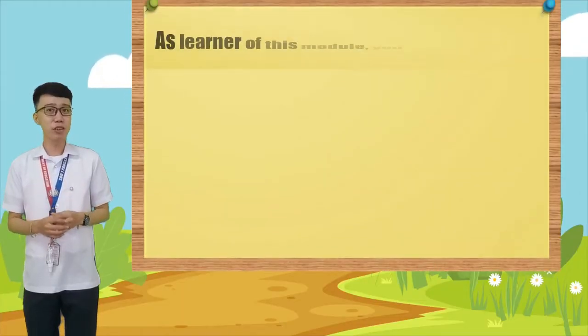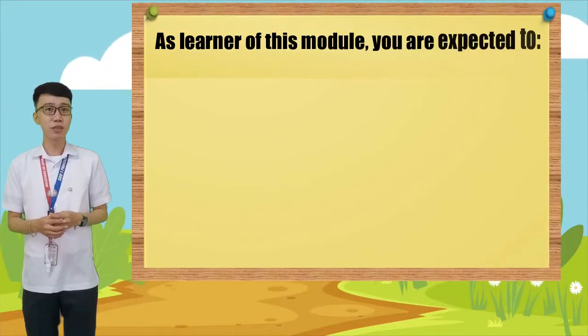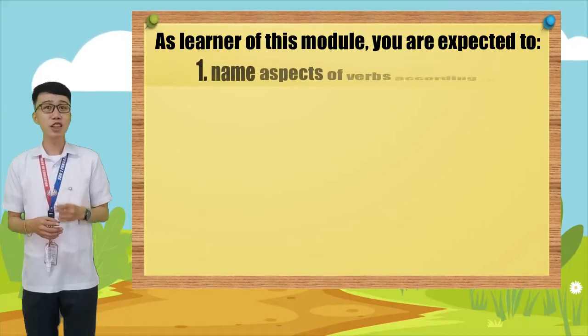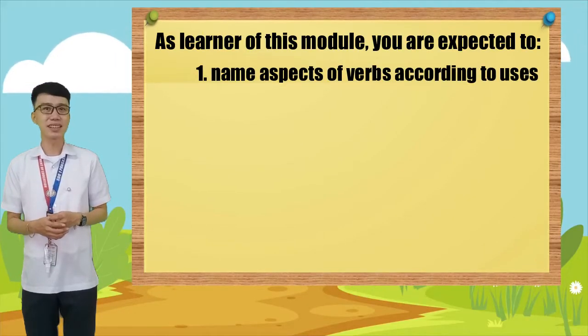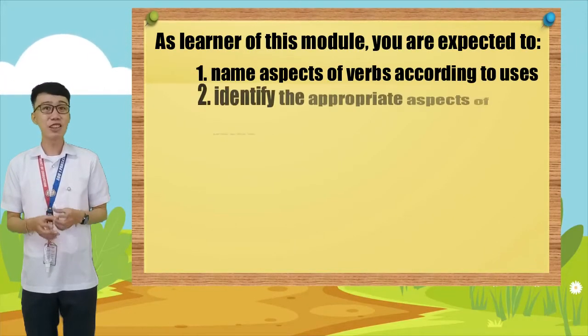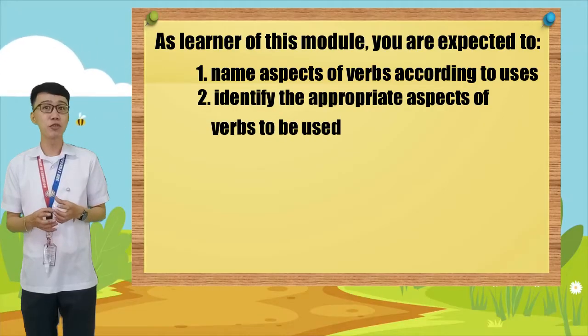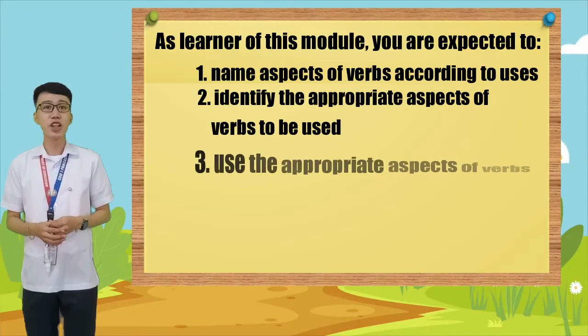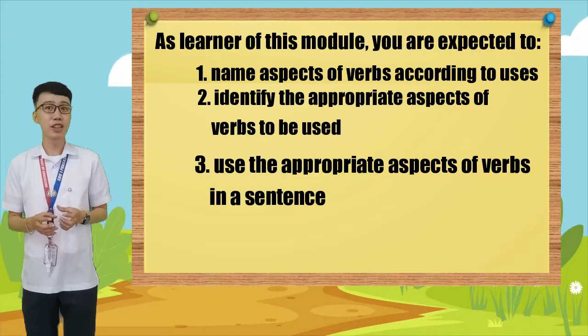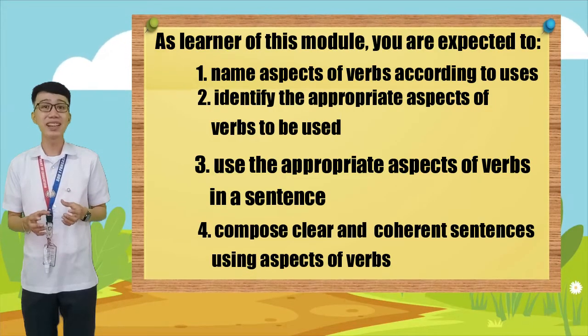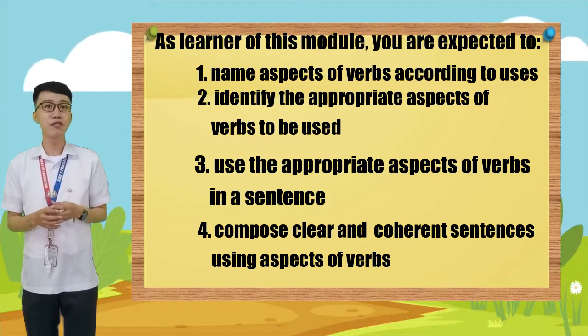As you go through, you are expected to enhance your knowledge and understanding in using aspects of verbs. This lesson will help you develop your abilities in coping with the problems brought by life's challenges. As a learner of this module, you are expected to: First, name aspects of verbs according to uses. Second, identify the appropriate aspects of verbs to be used. Third, use the appropriate aspects of verbs in a sentence. And fourth, compose clear and coherent sentences using aspects of verbs.